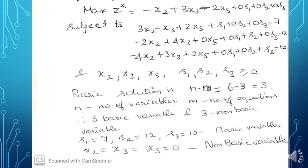For the objective function, we add 0·s1, 0·s2, and 0·s3. So the variables are x2, x3, x5, s1, s2, s3. The basic solution count is N - M = 6 - 3 = 3, where M is the number of equations (3) and N is total variables (6). So we have 3 basic variables and 3 non-basic variables. The non-basic variables x2, x3, x5 are set equal to 0, giving s1 = 7, s2 = 12, s3 = 10.